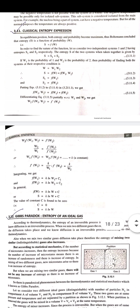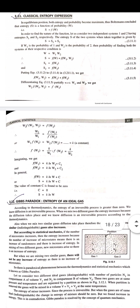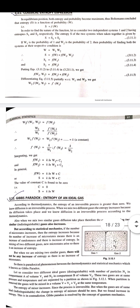In order to find the nature of the function, let us consider two independent systems, 1 and 2, having entropy S1 and S2 respectively. Entropy is an additive quantity, so S equals S1 plus S2. If W1 is the thermodynamic probability of the first system and W2 is the probability of the second system, then the probability of finding both systems in their respective conditions will be W equals W1 times W2.